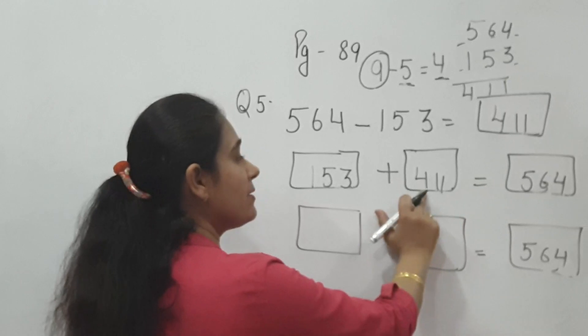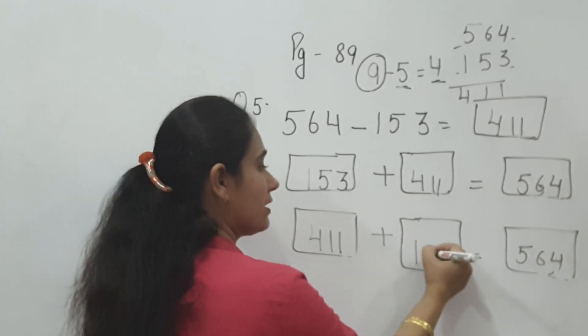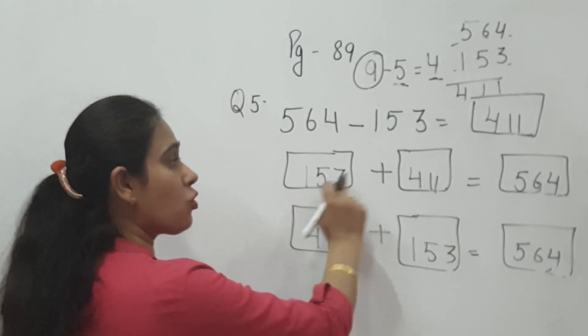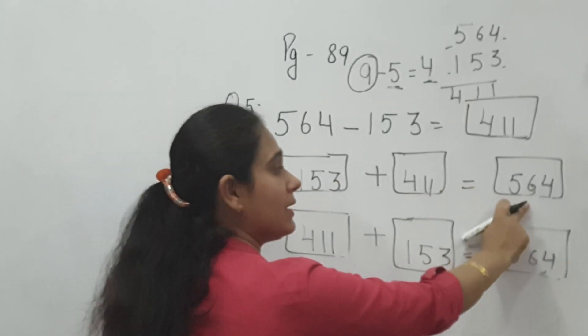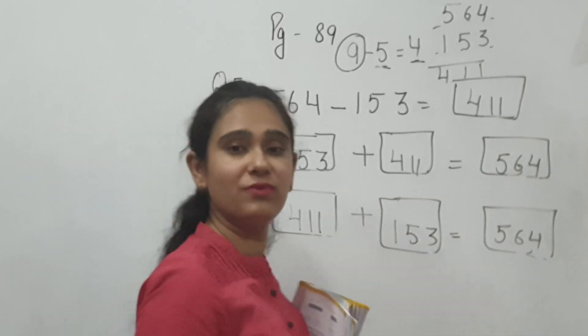Now we can write 411 first, plus 153. Or you can do this and this else, answer will be same. Or you can do this and this else, answer will be same.